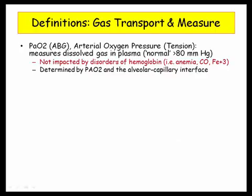The first thing to note is PaO2 is obtained from arterial blood gas analysis. That is, you won't have to calculate it. It will be given as a numeric value if they want you to have it. Key point here is that it is not impacted by disorders of hemoglobin, such as anemia, carbon monoxide, and methemoglobin. The PaO2 is determined by alveolar oxygen and the alveolar-capillary interface.